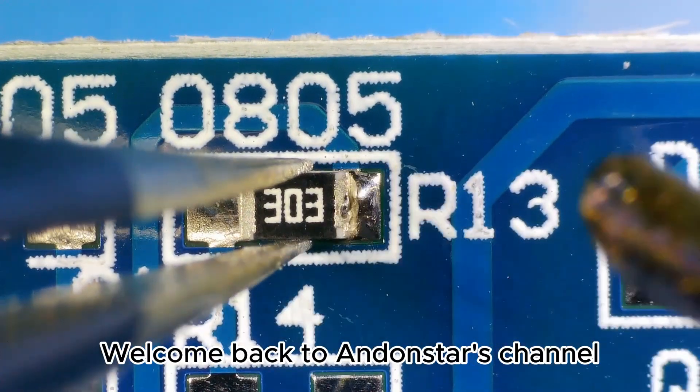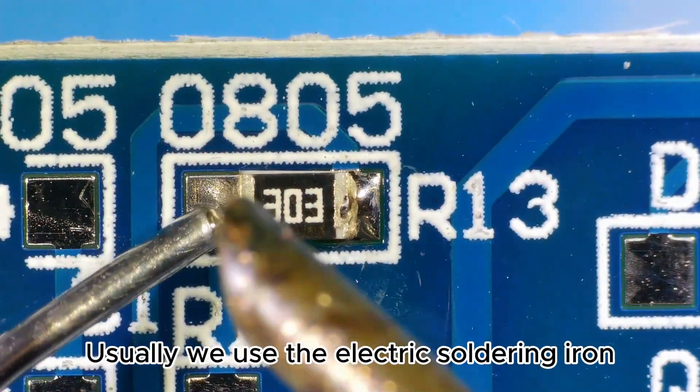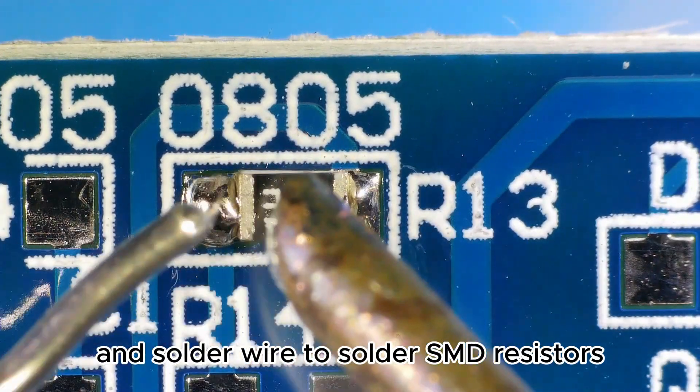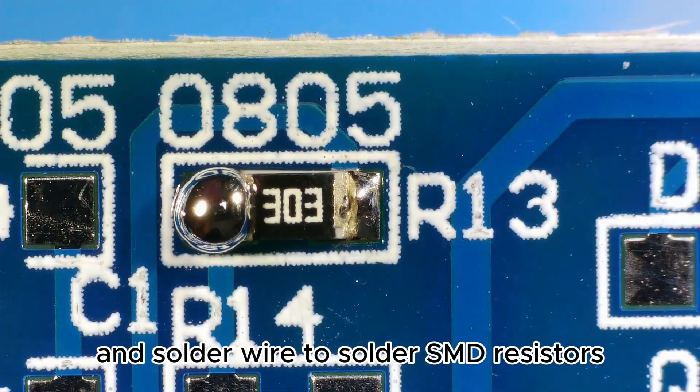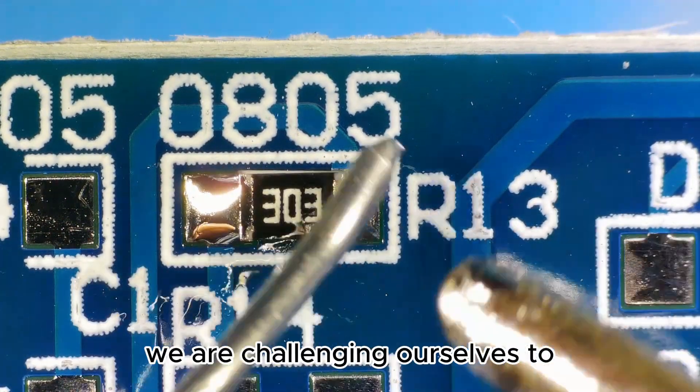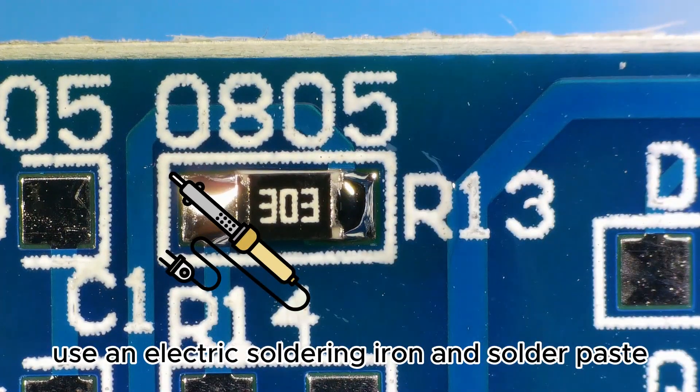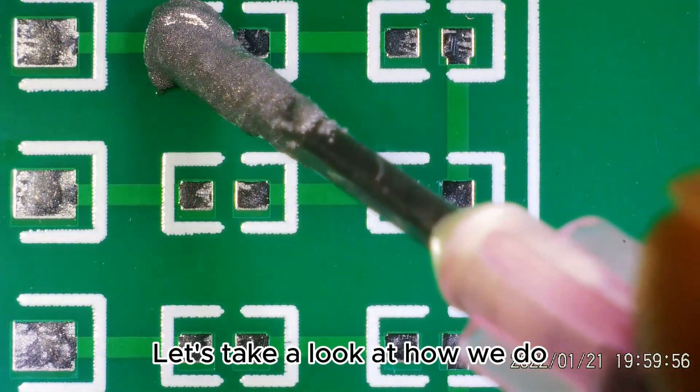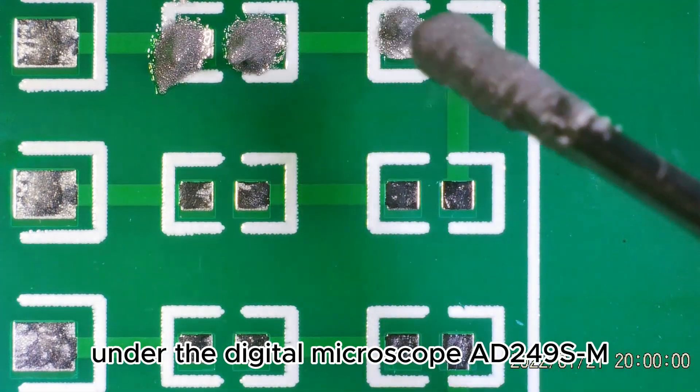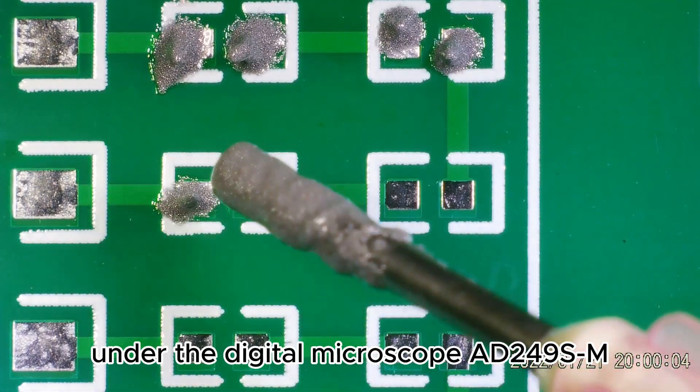Welcome back to Andonstar's channel. Usually we use an electric soldering iron and solder wire to solder SMD resistors. But today, we are challenging ourselves to use an electric soldering iron and solder paste for soldering. Let's take a look at how we do under the digital microscope AD249S-M.